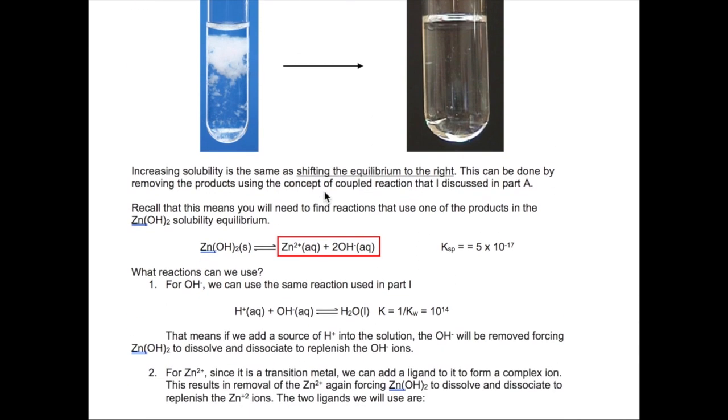Well, you know from your experiment in Part B that volume and temperature can accomplish this goal. But in this part, we don't want to use either of those tools. Instead, we want to do this using the concept of coupled reaction. So recall that this means you want to find reactions with K much larger than 1 that will use one of the products of the zinc hydroxide dissociation, which is either zinc or hydroxide ion.